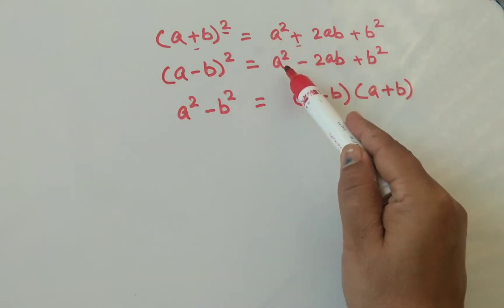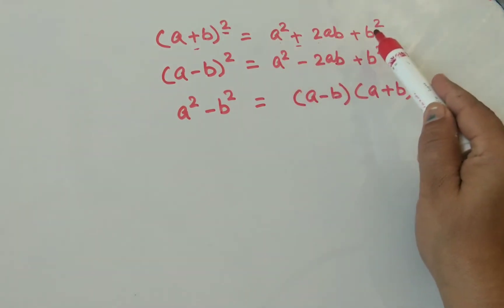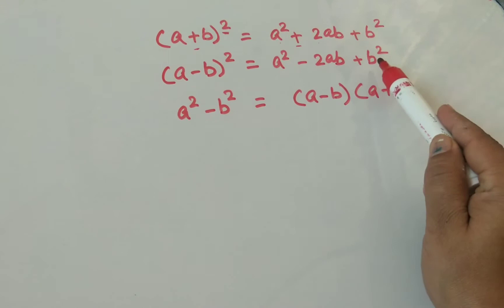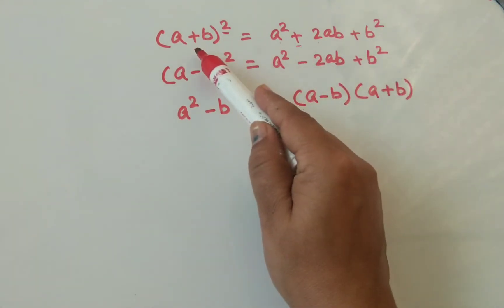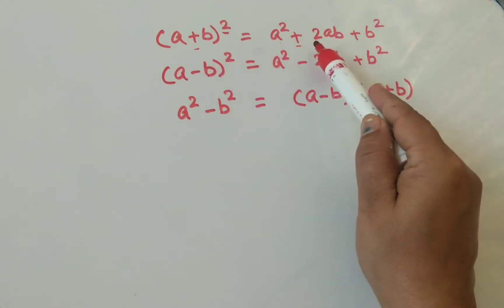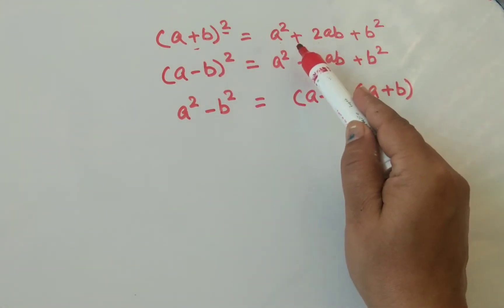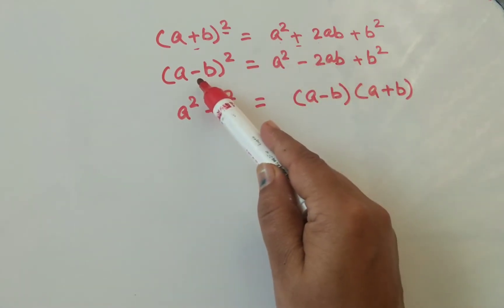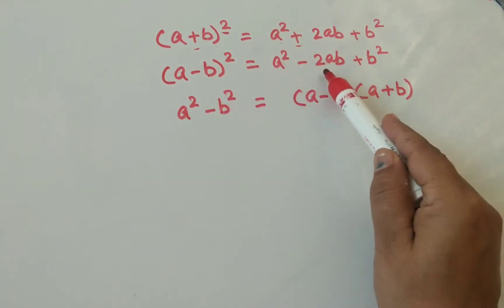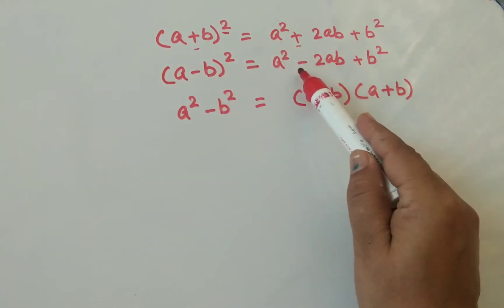To summarize: a square and b square remain the same in both identities. If there is a plus sign ahead, you apply the plus sign before 2 as well. If there is a minus sign, then here we will also apply the sign of subtraction before 2ab.